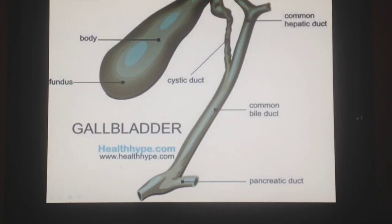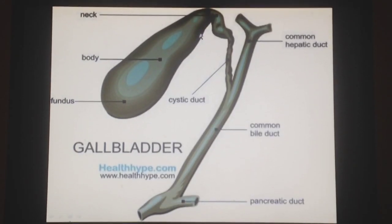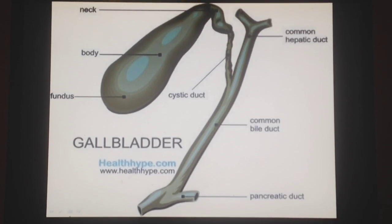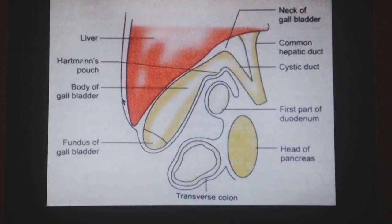Now discussing the parts of the gallbladder. The gallbladder is divided into the fundus, the body, and the neck — the third part — which becomes continuous with the cystic duct that drains the gallbladder. The fundus is the rounded end and it is surrounded by the peritoneum.